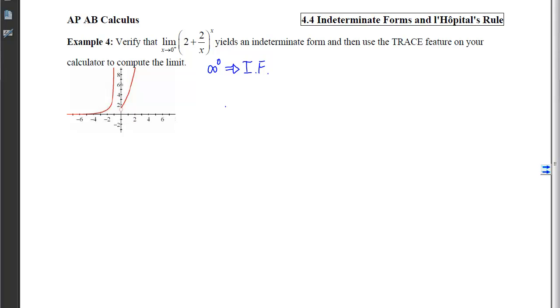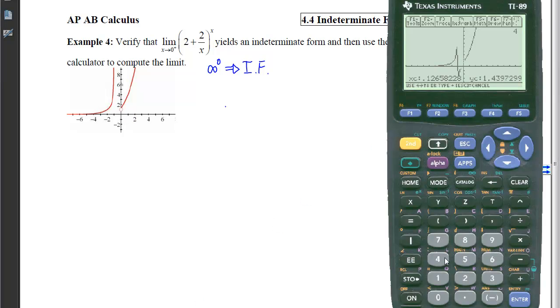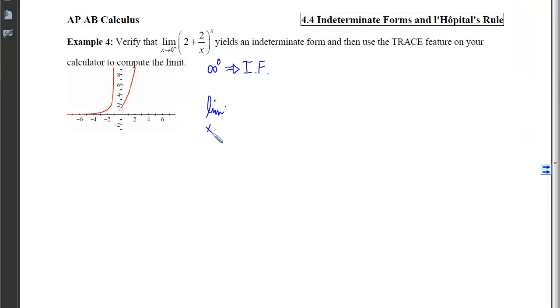We can see graphically here that we're getting closer and closer from the right to this y-coordinate of 1. If I look now at my calculator and trace super close to 0 but on the right-hand side, we can see that the output is getting closer and closer to 1. So the limit as x approaches 0 from the right of 2 plus 2 over x to the x will be 1. So in this case I had something really big raised to 0 and it gave me 1.